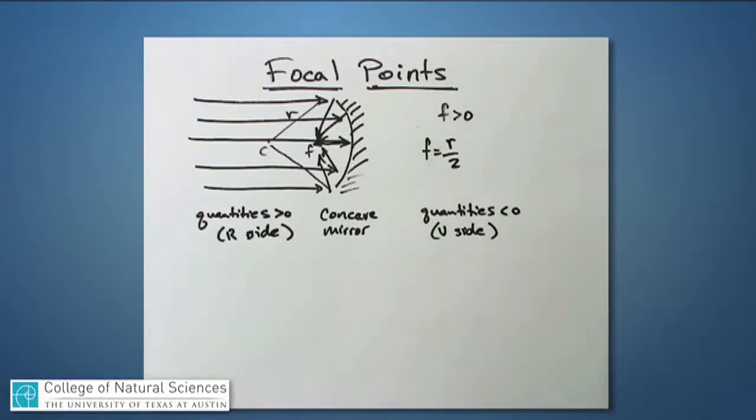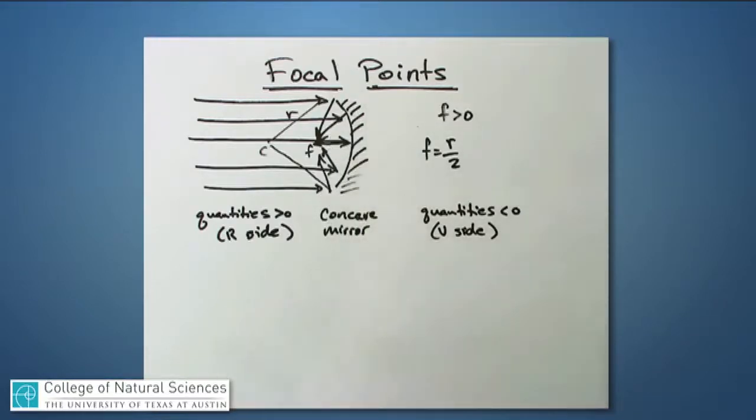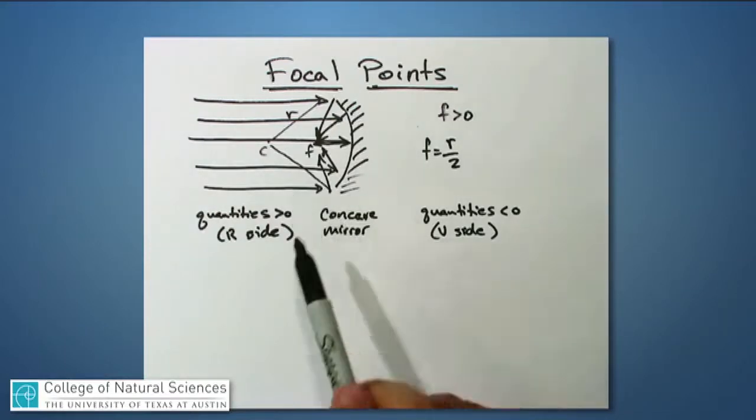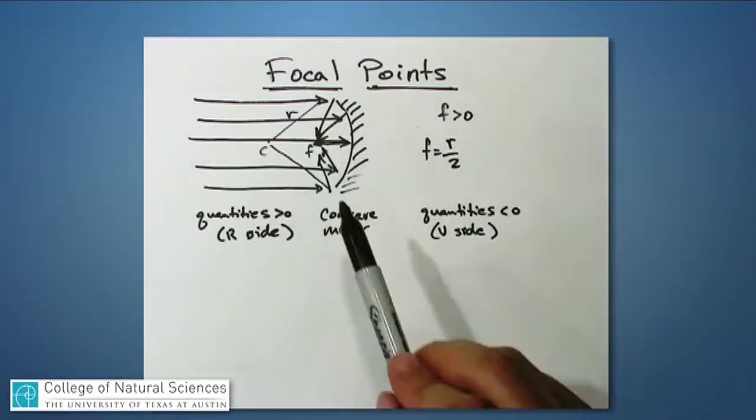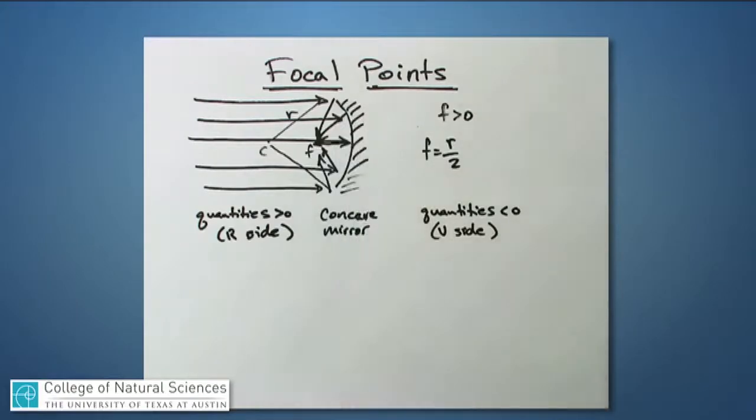By the same token, if I had a little object located right there, a little candle, and it was emitting light in all different directions, that object, as it was emitting light into the mirror at these various locations, would send light out in a parallel beam. So if I wanted, I could make a great little flashlight by putting a candle right there, putting a curved mirror behind it and putting the candle exactly at the focal point, and I would have a perfect parallel beam I could use to illuminate something at a distance.